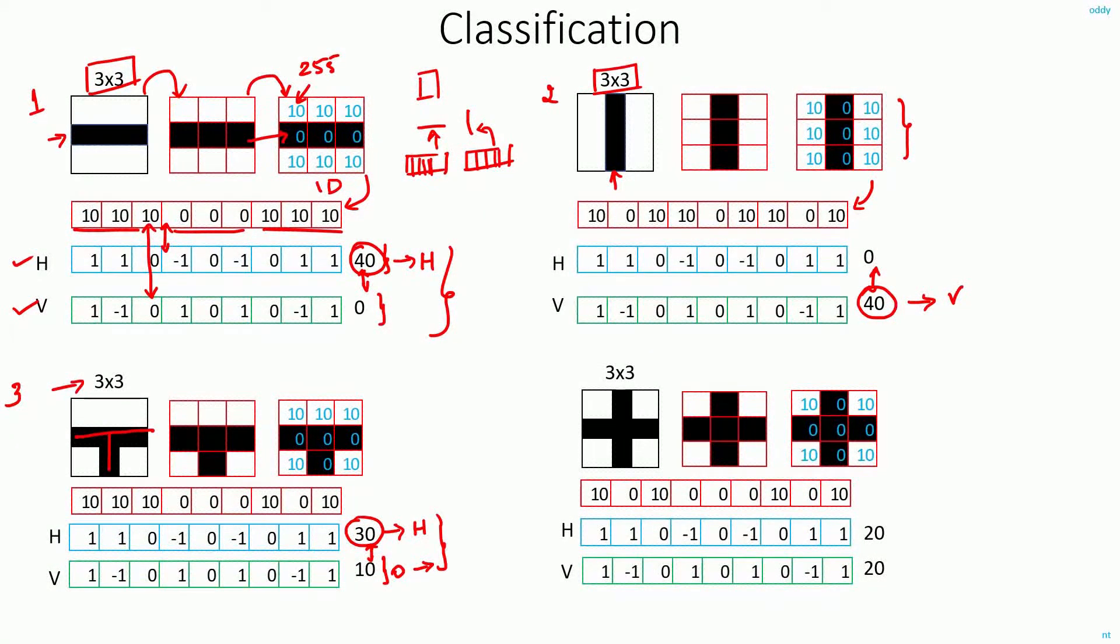But there can be cases, for example, if your image is looking like this, a plus sign, where both the horizontal and vertical edges are equal in length, then the filter outputs of both horizontal and vertical filters will be same, 20 and 20. So here, it becomes difficult for me to conclude or classify this image as either horizontal or vertical. The probability of this image being horizontal and vertical is both same, that is 50%.